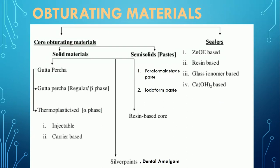Different obturating materials available for endodontics are divided into two categories: core obturating materials and sealers. Sealers have been discussed in the previous lecture — zinc oxide eugenol based, resin based, glass ionomer based, and calcium hydroxide based sealers. Now we will talk about core obturating materials, which are of two types: solid materials and semi-solid paste.